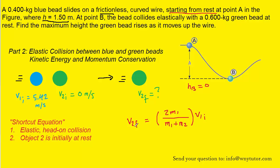So in this equation, we have the final speed of object two, we have the mass of object one labeled m1, the mass of object two labeled m2, and then we have the initial speed of object one, which we calculated as 5.42. So if we simply plug in the mass of the blue bead, the mass of the green bead, and the initial speed of the blue bead, we're going to easily be able to calculate the final speed of the green bead after the collision.